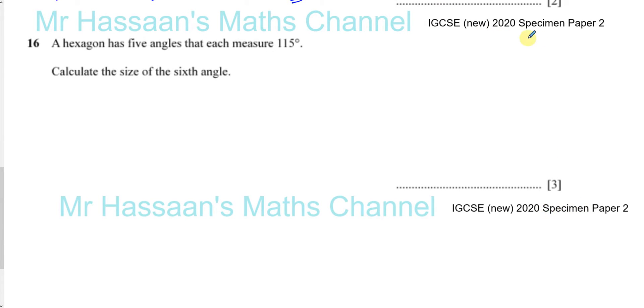Now for question number 16 from the specimen paper for the 2020 new IGCSE syllabus from the University of Cambridge. A hexagon has five angles that each measure 115 degrees. Calculate the size of the sixth angle.